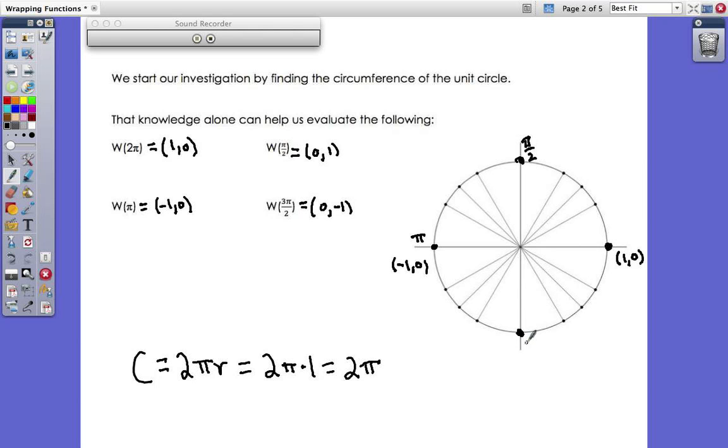So those four are the first of the 16 that we will derive and that you'll have to commit to memory. And that's 2π, which is also known as 0. I put a comma there because you can say it either way, not because it's an ordered pair. π over 2, who has an ordered pair of 0, 1. π, negative 1, 0. And 3π over 2, 0, negative 1. So those are the first four. Of course, they're the easiest. We'll do the easiest stuff first. On to the next page.